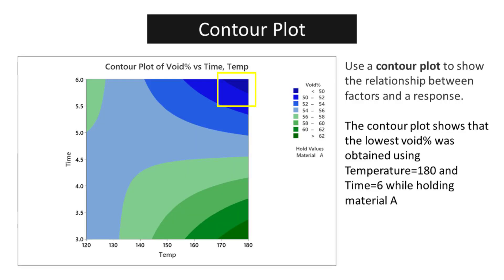Use a contour plot to show the relationship between factors and a response. The contour plot shows that the lowest void percent was obtained using temperature of 180 and time of 6 while holding material A.